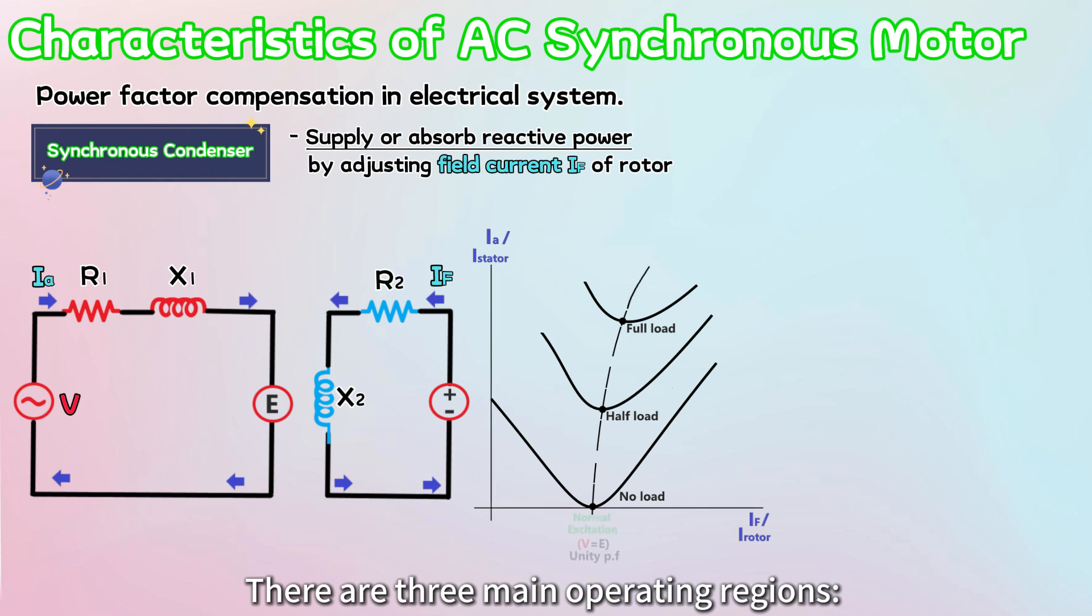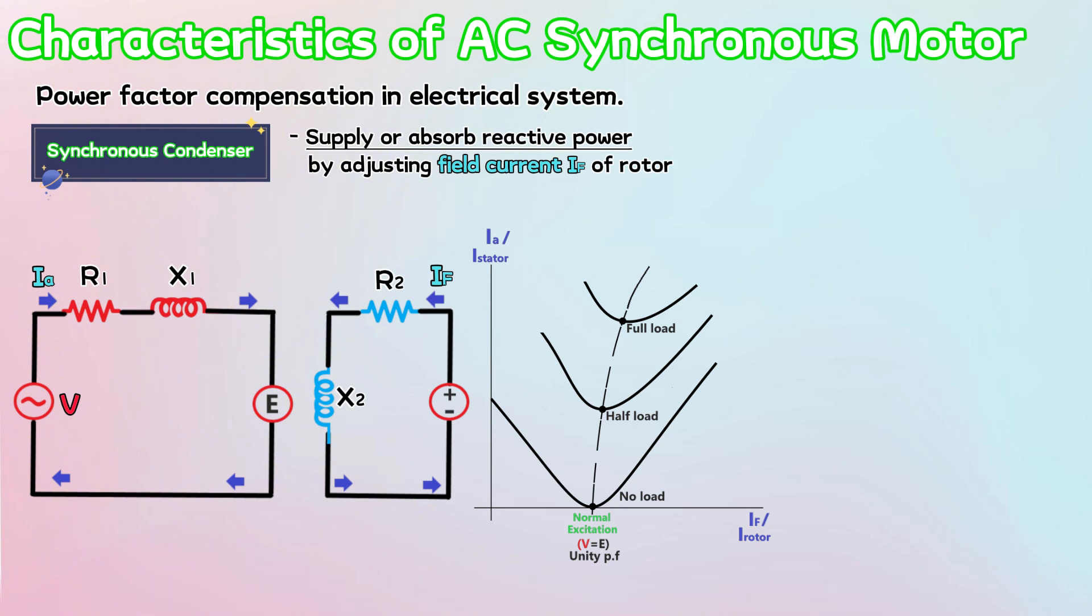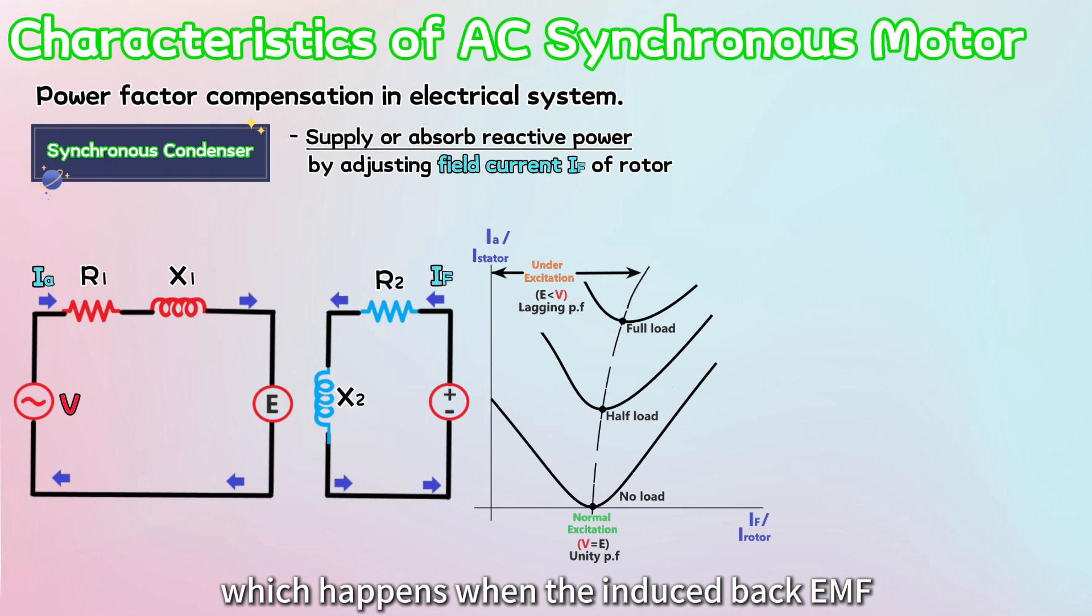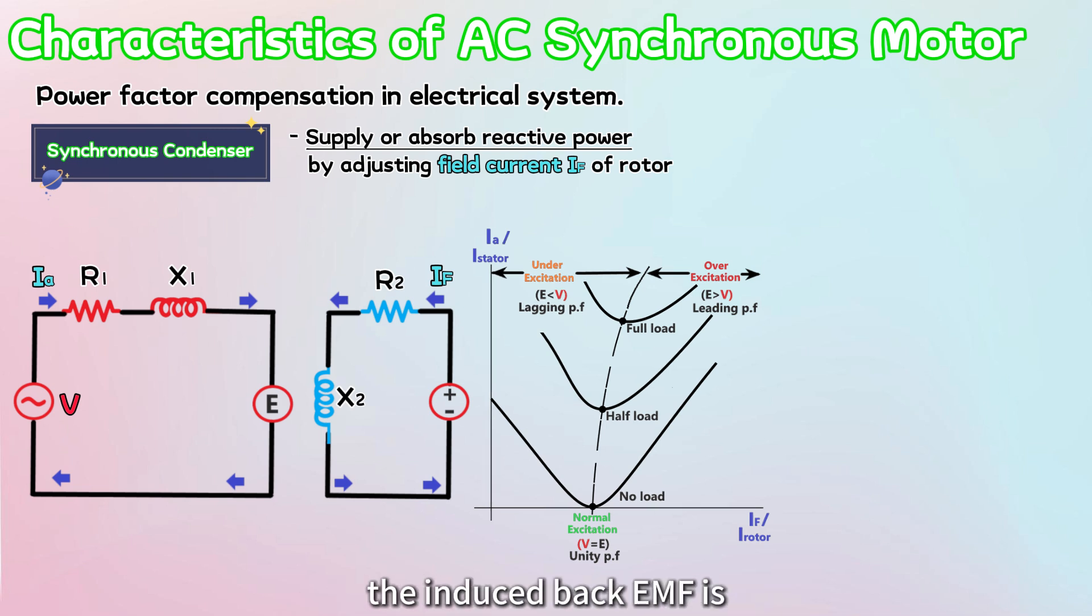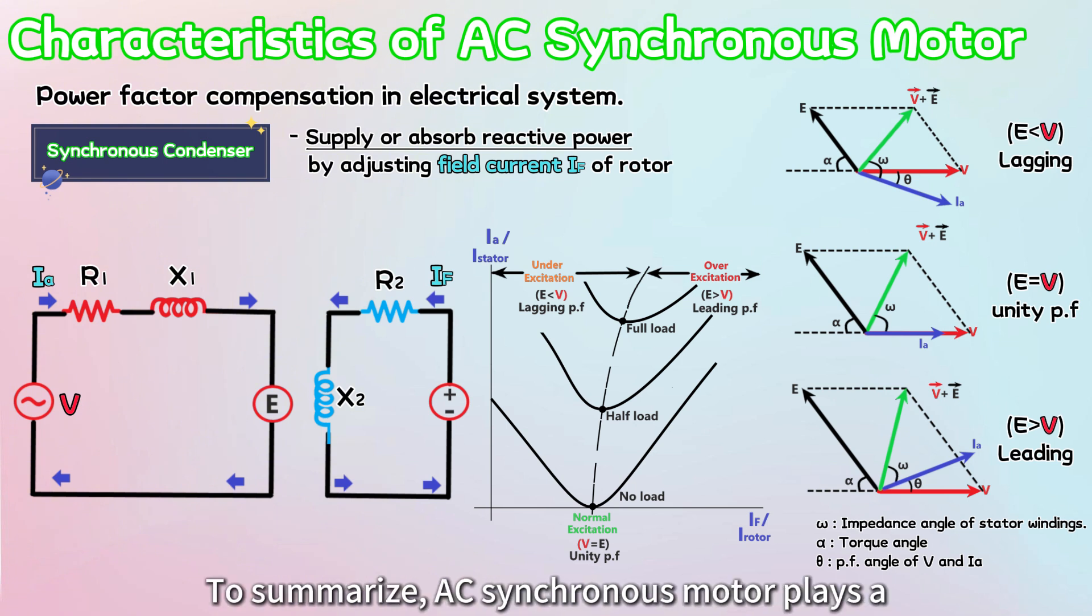There are three main operating regions: unity power factor, which occurs when the induced back EMF equals the source voltage; under excitation or lagging power factor, which happens when the induced back EMF is smaller than the source voltage; and over excitation, which produces a leading power factor when the induced back EMF is larger than the source voltage. These three operations can also be illustrated through phasor diagrams. To summarize, AC synchronous motors play a crucial role in power factor correction by providing reactive power compensation in an electrical system.